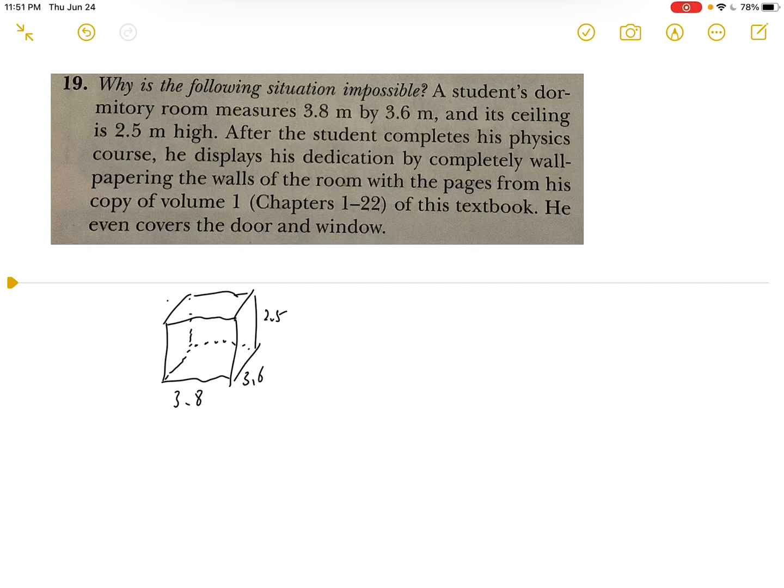Hey everyone, today I'm going to solve a physics problem. Here's the question: The area of the room will be 2 times 3.8 times 2.5 plus 2 times 3.6 times 2.5, and this will give us the total area of the wall, which is 37 meters squared.